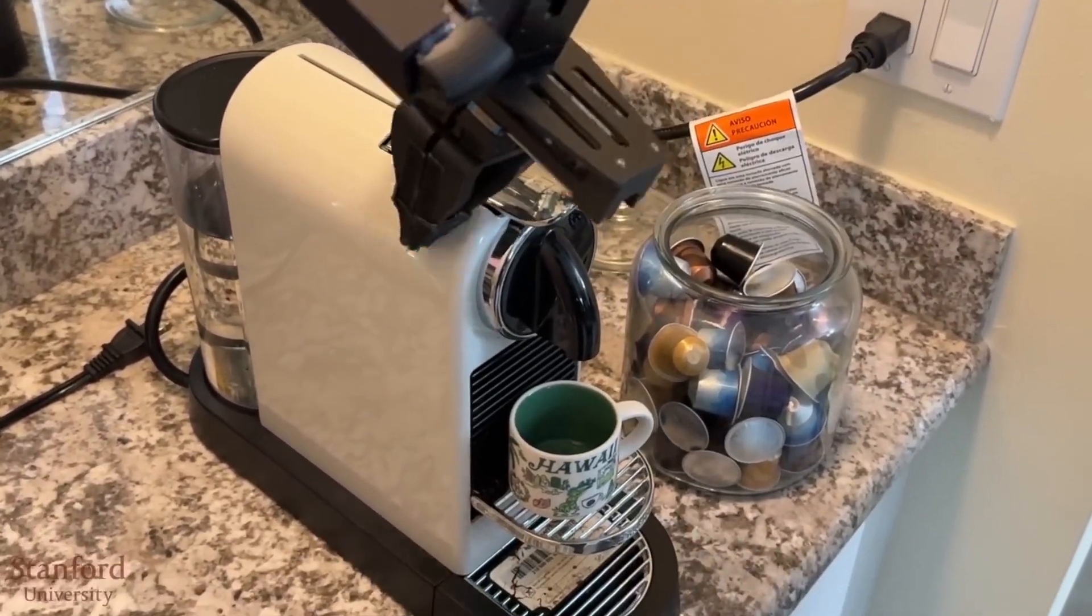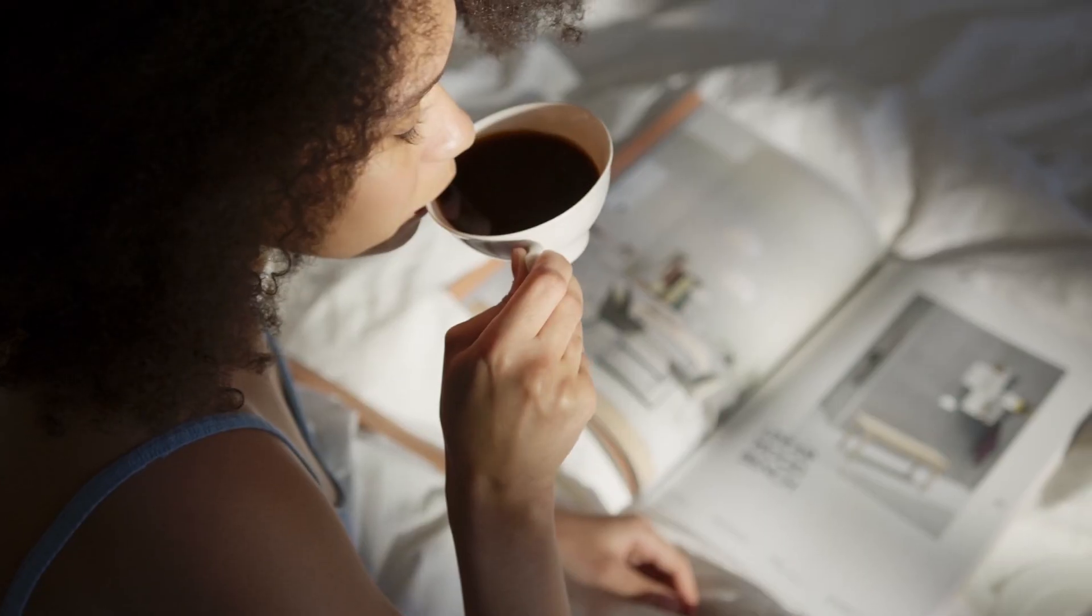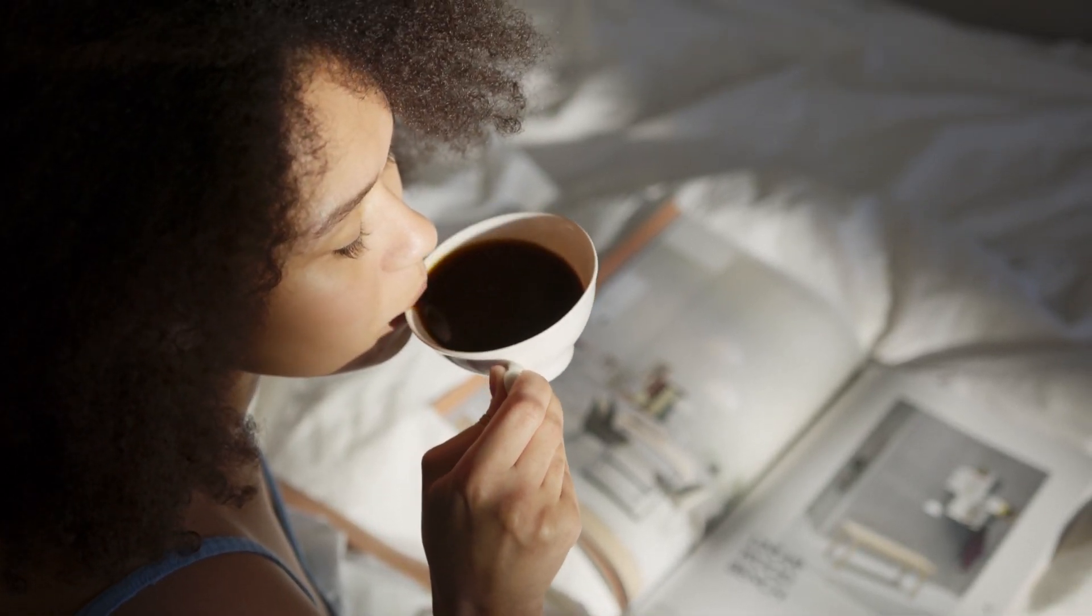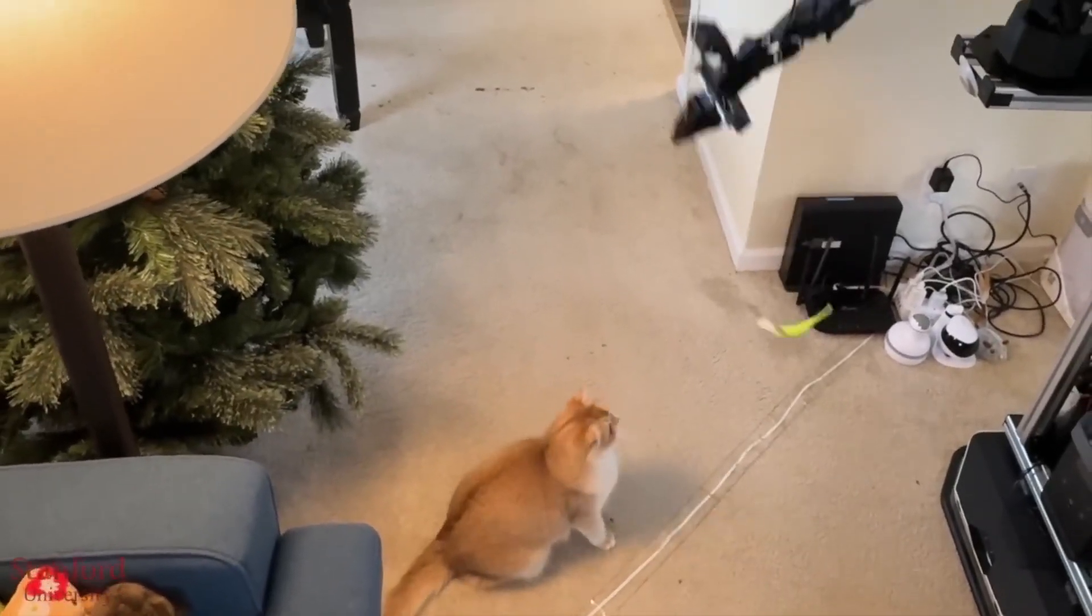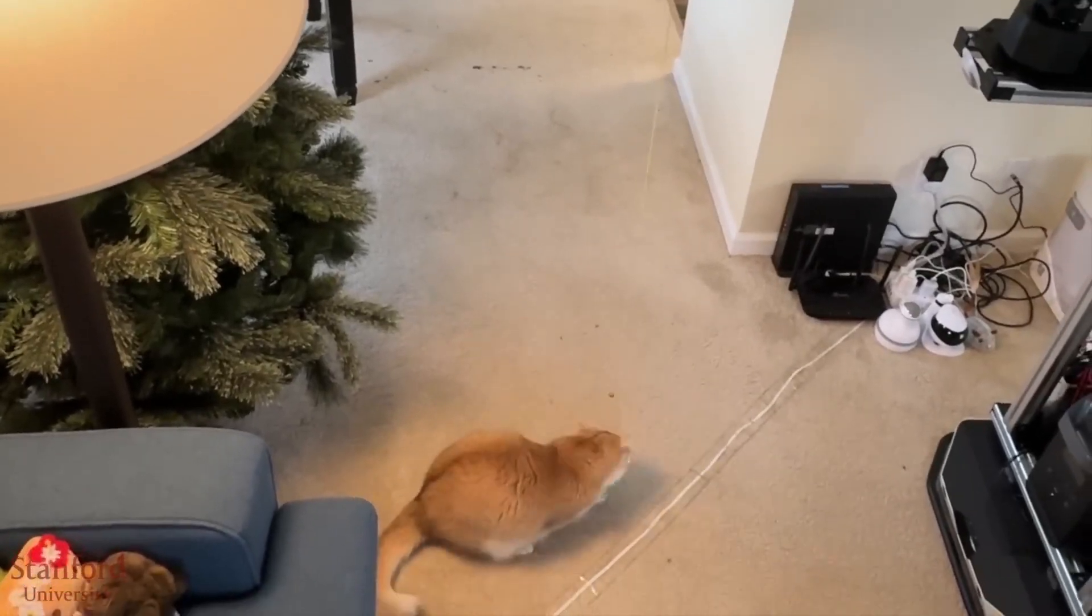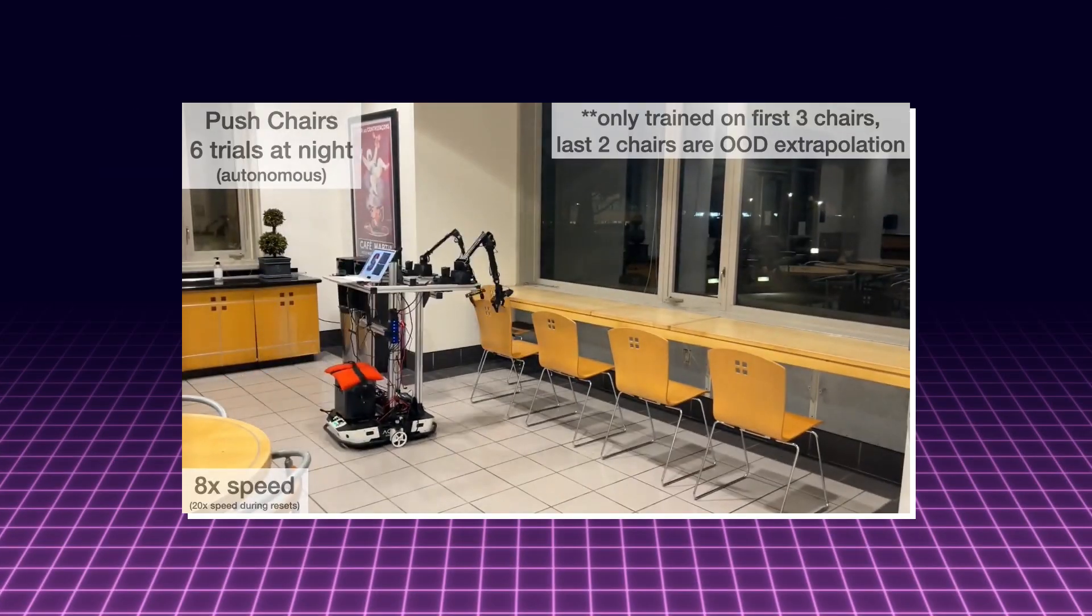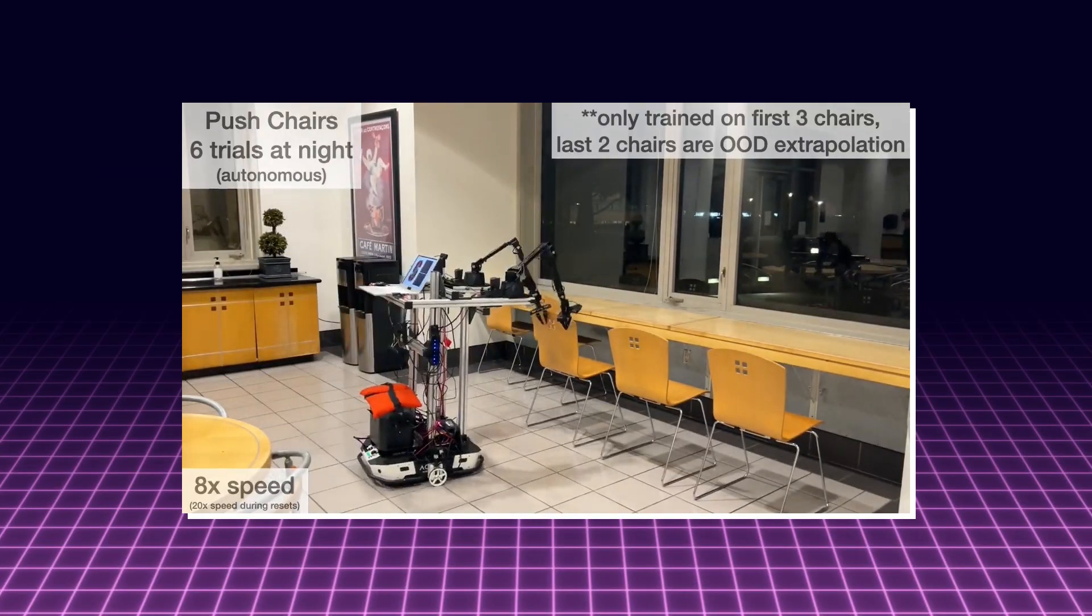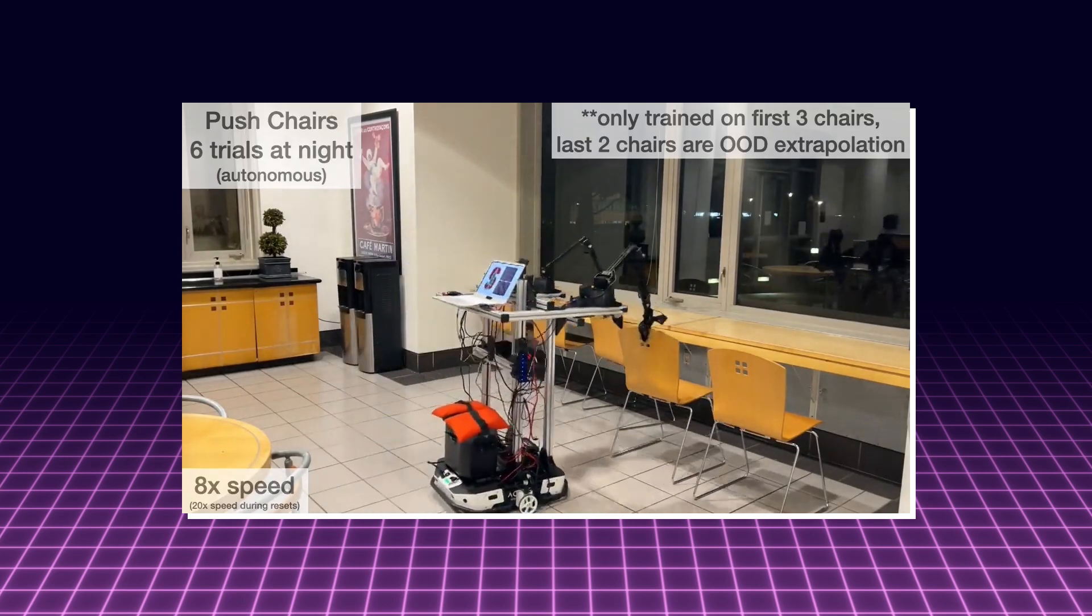Need a cup of joe to kick-start your day? Let the robot whip up the perfect brew, saving you those precious morning minutes. Pets in the house? Fear not. Mobile Aloha extends its helpful paw to feed and play with your furry friends. This robot is untethered and has a large battery in its base, which allows for long work periods and stability.